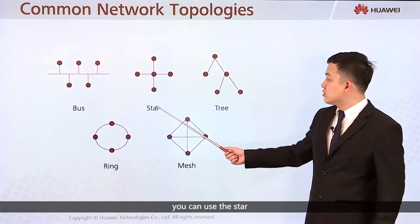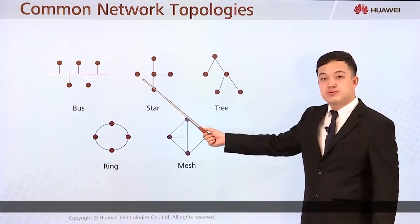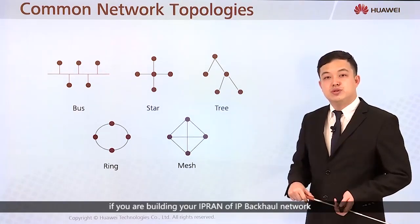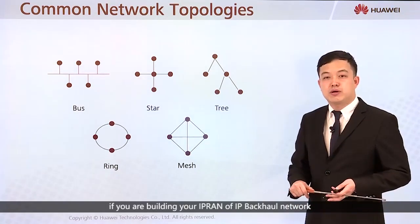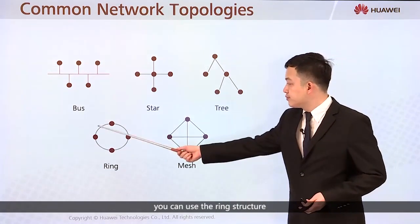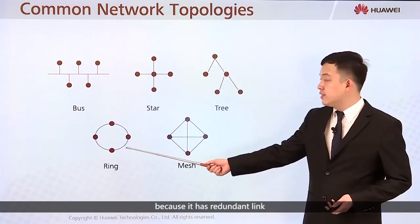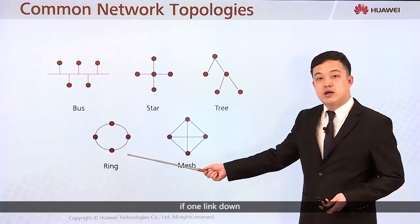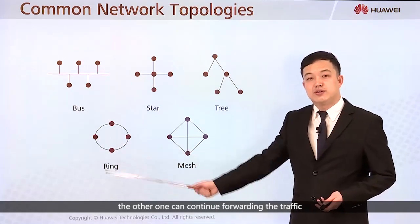If your network structure connects branches to your headquarters, you can use the star topology — this is the headquarter and these are the branches. If you are building an IP RAN or IP backhaul network, you can use the ring structure, because it has redundant links — if one link goes down, the other can continue forwarding traffic.